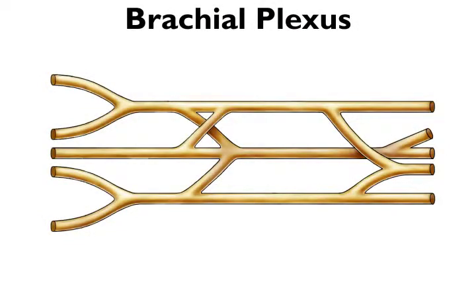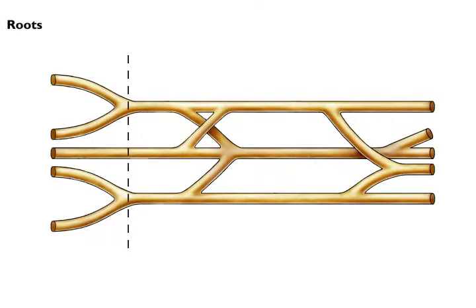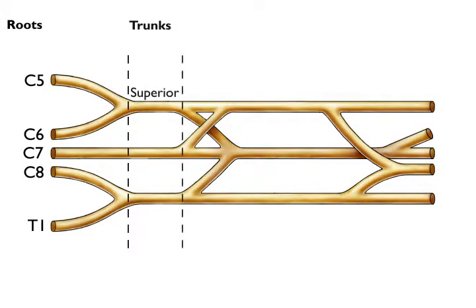In the neck, the brachial plexus forms from the roots at spinal levels C5, C6, C7, C8, and T1. The C5 and C6 roots join to form the superior trunk. C7 continues as the middle trunk. And the C8 and T1 roots join to form the inferior trunk.